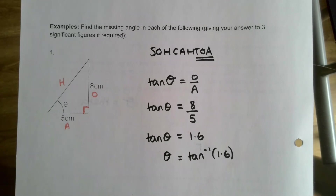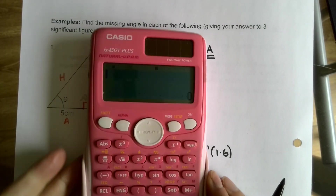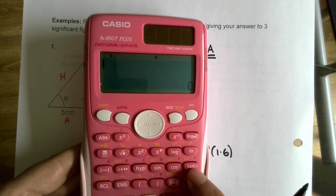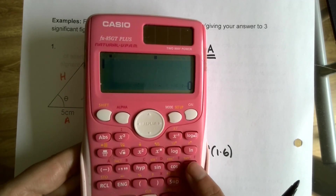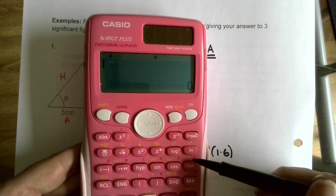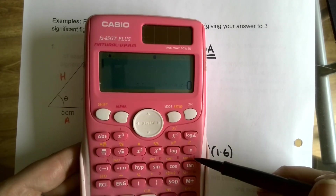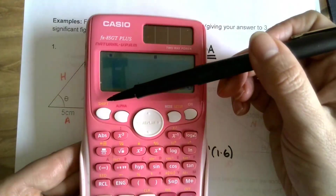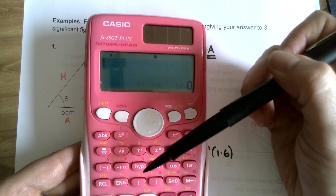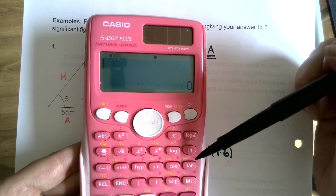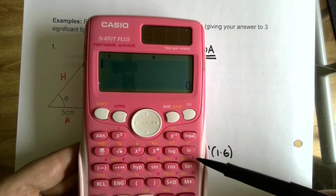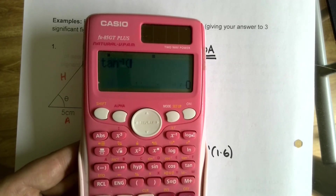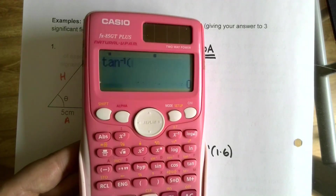Now I'll show you how to type that into your calculator. To get tan⁻¹, hit Shift and then the tan button - you can see above it in yellow writing it says tan⁻¹, and because the Shift button is yellow, hitting Shift then tan gives you tan⁻¹. The Casio puts in the first bracket for you. Type tan⁻¹(1.6), close the bracket, and hit equals.